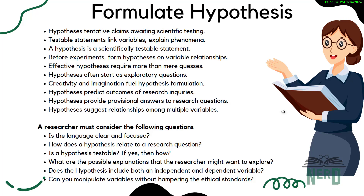Think about the things you're comparing or looking at — these are your variables, like we talked about in our previous session: dependent, independent, confounding, and extraneous variables. For example, if you're checking whether sunlight affects how tall a plant grows, the sunlight is your independent variable and the plant's height or growth is your dependent variable. You can also have more than one hypothesis for a mystery you're trying to solve — maybe sunlight affects the plant's height, but you also wonder if the type of soil matters too. That's two hypotheses. In summary, a hypothesis is your educated guess about how things work — it's clear, testable, and all about making connections between things you observe. It's totally okay if your hypothesis turns out to be wrong; that's just part of the science game. You learn, tweak your guess, and try again.